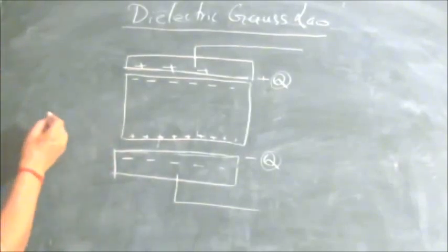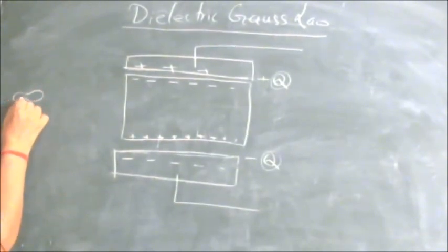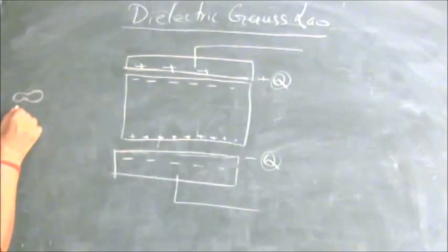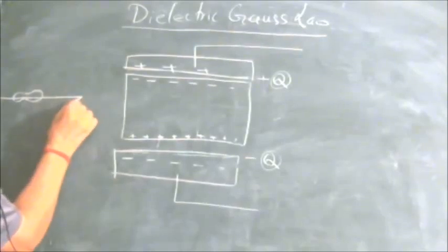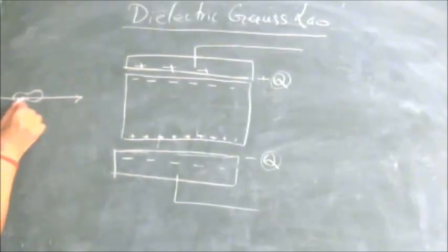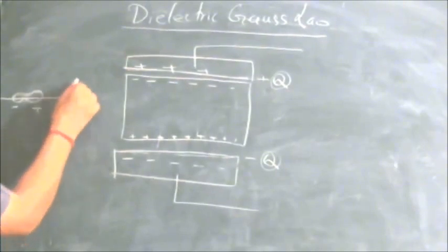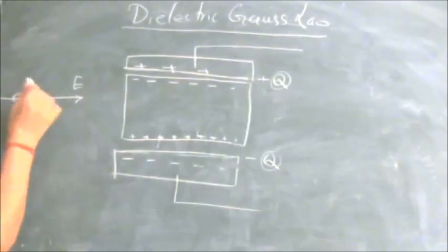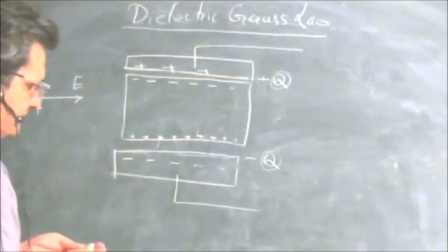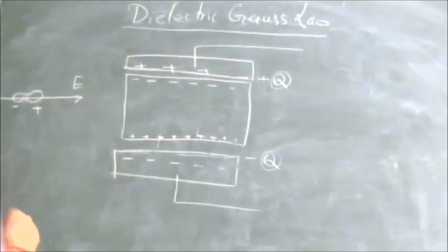Let me take a few minutes to explain how these charges come about. We know that when a dielectric is placed in an electric field, the dipole moments of the polyatomic molecules get aligned. If this is the electric field and this is a dipole in the dielectric — with negative here and positive here — they get aligned along the electric field.